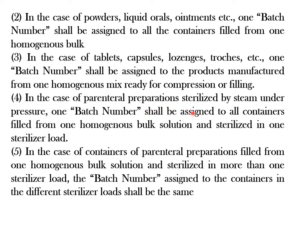In case of parenteral preparations, it is sterilization which will determine the batch number. For parenteral preparations sterilized by steam under pressure, all that bulk which has been sterilized at one time in one autoclave, where it is further subdivided into smaller ampules or vials, will have one batch number. The entire load sterilized in one sterilization cycle in one autoclave gets a single batch number. It may be filled into 1000 vials or 5 lakh ampules, but all those 5 lakh ampules will have the same batch number because the most critical activity of sterilization of the entire bulk has been done together.